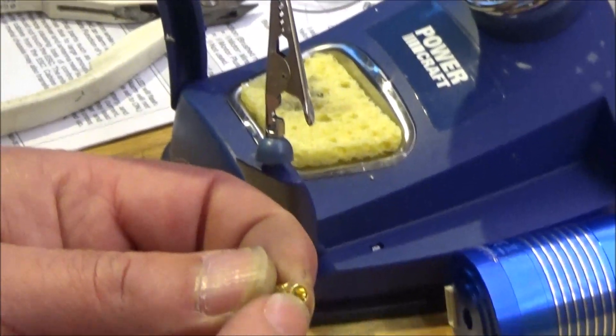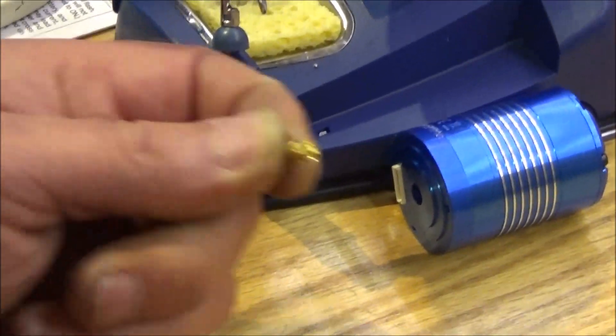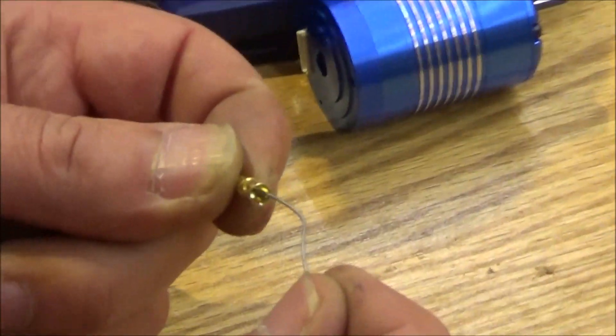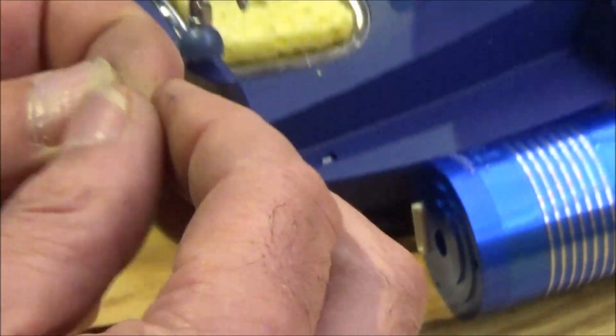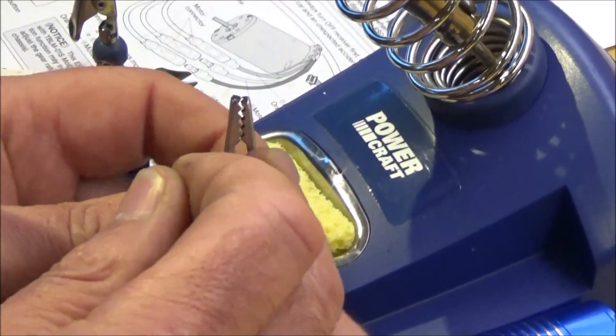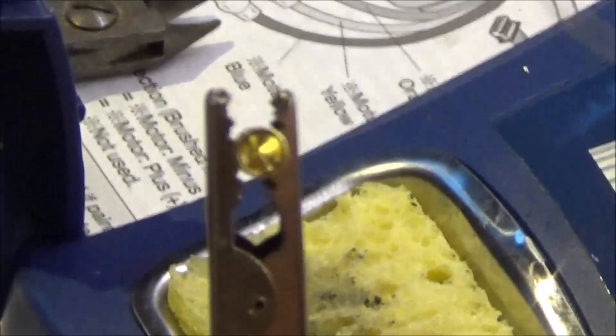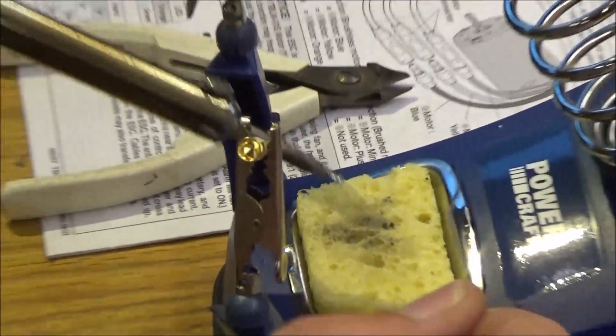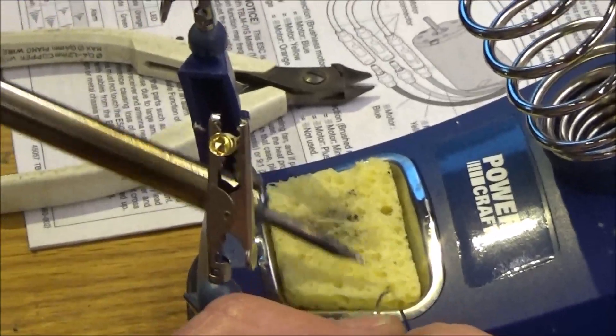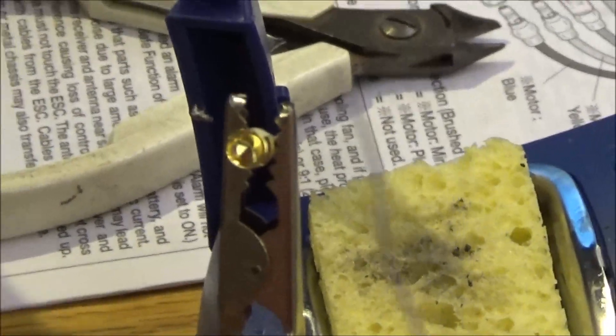Right, the first thing I'm going to do is what's called tin the connector. Tinning means applying a load of solder into the component before we try soldering it to anything else. Basically you want to get some solder on both of the items you want to solder together before you connect them together—that's the secret in getting a good soldered joint. If you haven't soldered before, don't be scared, it's not difficult. Make sure you have a nice clean soldering iron. This is a damp sponge here just to clean off any excess dirt on there.